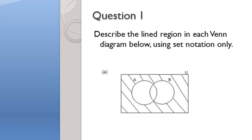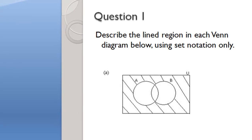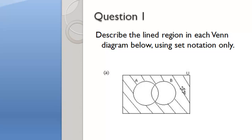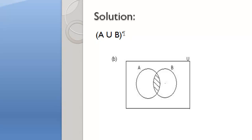Question 1: Describe the lined region in each Venn diagram below using set notation only. Part A shows this diagram. The shaded region is everything outside of A union B. One word should come to mind for everything outside of — and that word is complement. The solution for Part A is A union B complement.